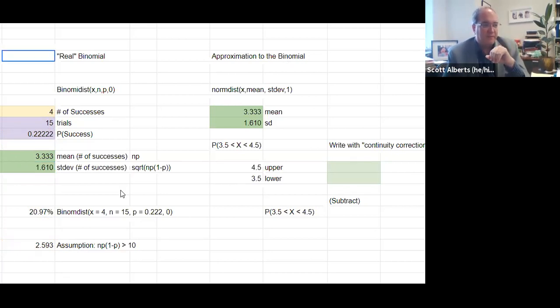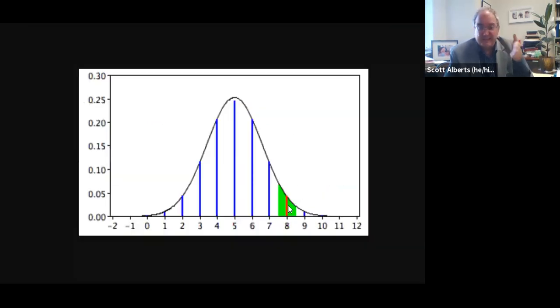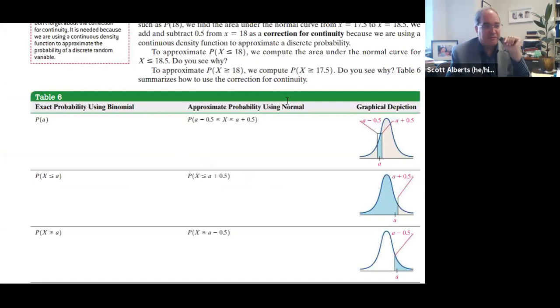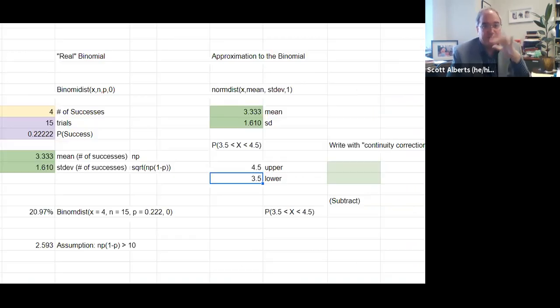This over here is the binomial stuff we already did. On this side, we're going to start to add these calculations to get this approximation. The mean and standard deviation are the same. The other thing we need to think about is that continuity correction. If we want to think about four successes, we're going to go between three and a half and four and a half. The textbook has all these rules, but I typically just draw the picture and eyeball it.